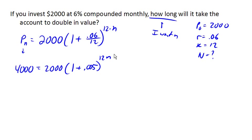Now the first thing I need to do is get that exponential by itself. So we're going to divide both sides of the equation here by 2,000. And then the left side, 4,000 over 2,000 is just 2. Equals 1.005 to the 12n.